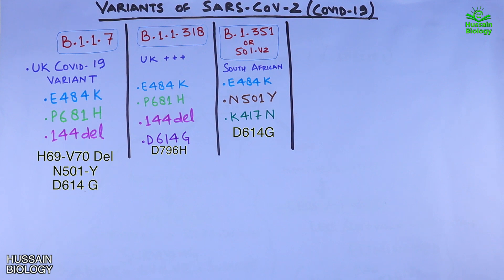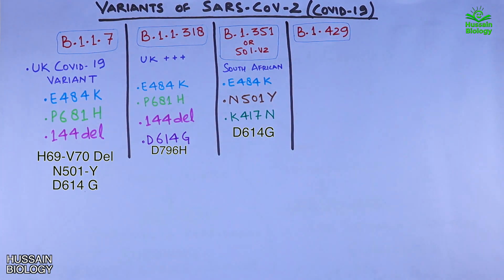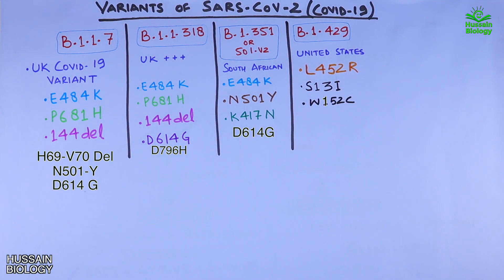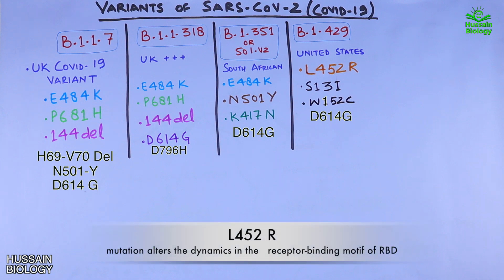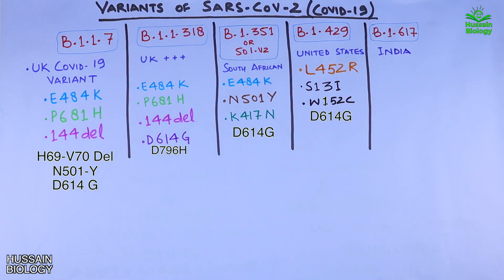Moving to another variant from the United States, B.1.429, mostly present in California. It has the L452R mutation, S13I mutation, W152C mutation, and D614G mutation. The L452R mutation means leucine at position 452 is replaced with arginine. This mutation alters the dynamics in the receptor binding motif of the RBD, which indirectly affects the binding of ACE2 receptors during infection.